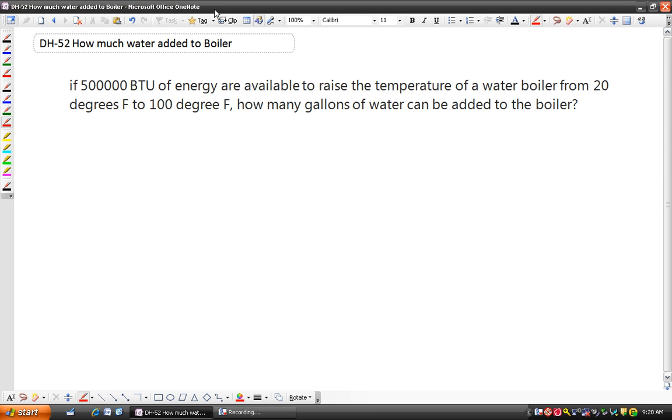Somebody asked me an environmental science question, which is really a thermodynamics question. If you have some boiler that is going to raise the temperature of water from 20 degrees to 100 degrees Fahrenheit, like say the hot water heater in your house, how many gallons of water can you do that for if you're adding 500,000 BTUs of energy?